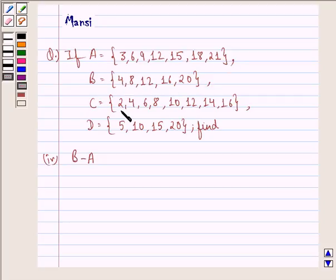C equals the set 2, 4, 6, 8, 10, 12, 14, 16, and D equals the set 5, 10, 15, 20. Then find the fourth part, that is B minus A.